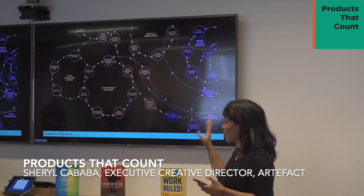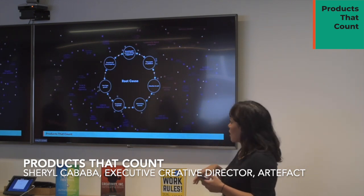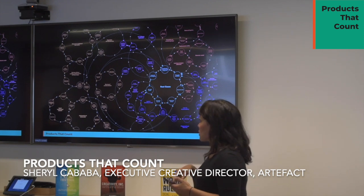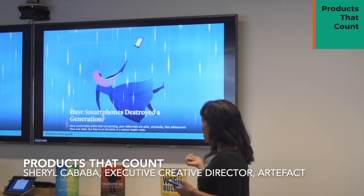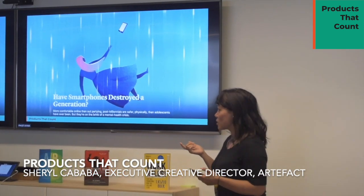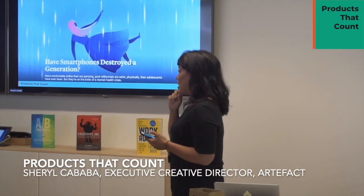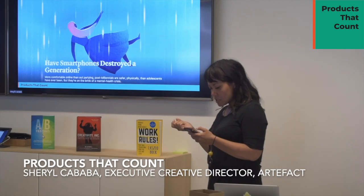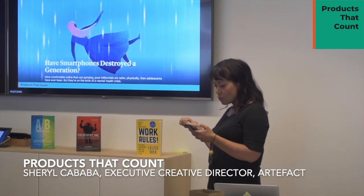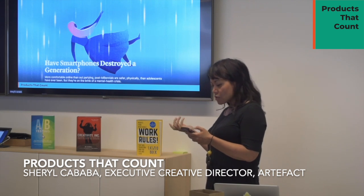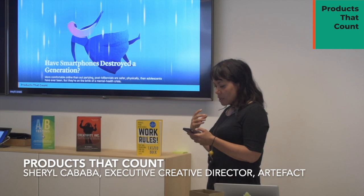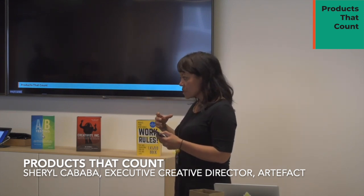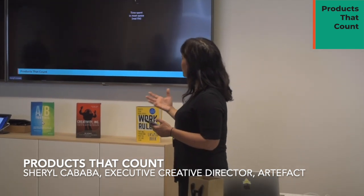I wrote a white paper about this — the link is at the end. On individual impact: there was an article in The Atlantic by researcher Jean Twenge, who studies digital impact on teens and young adults. She found that eighth graders who spend ten or more hours a week on social media are 56% more likely to say they are unhappy than those who spend less time. Moreover, when teens have more engagement online and fewer in-person interactions, feelings of depression and loneliness increase. We found this consistent with other research.